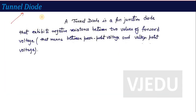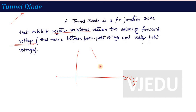Tunnel diode is a PN junction diode that exhibits negative resistance between two values of forward voltage. It is a special diode in which if you increase the forward voltage, the current decreases. That is the main property of the tunnel diode. These two values are called peak point voltage and valley point voltage.